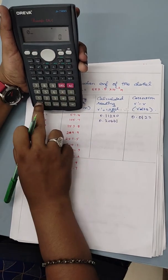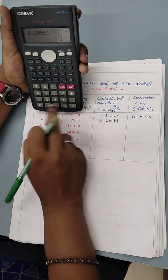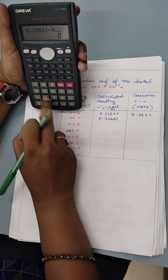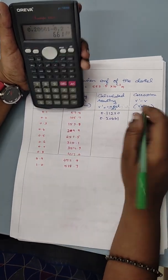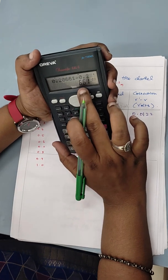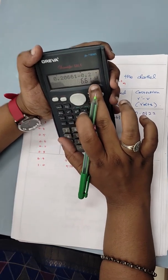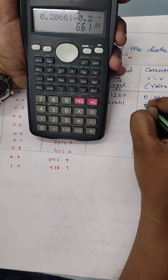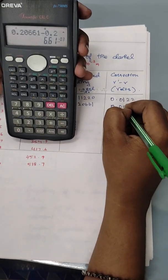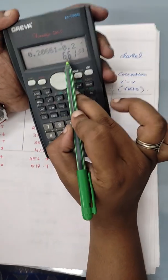0.20661 minus 0.2. So it is going to be 6.61 into 10 to the power minus 3. So what I need to write 0.00...